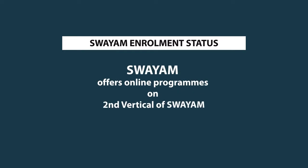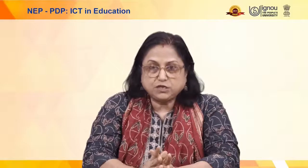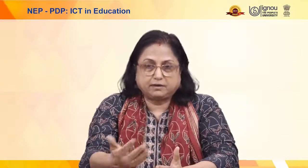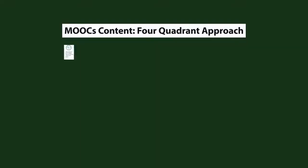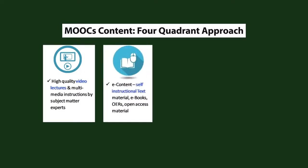The SWAYAM platform is also being used for offering complete online programs, known as the second vertical of SWAYAM. In SWAYAM, we follow a four-quadrant approach, which is very unique and not available in any other MOOC platform. The first quadrant gives emphasis on high-quality video lectures and multimedia instructions by special subject matter experts. The second quadrant is e-content self-instructional material, which could include e-books, OERs, and open access material.